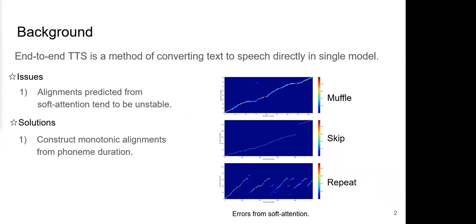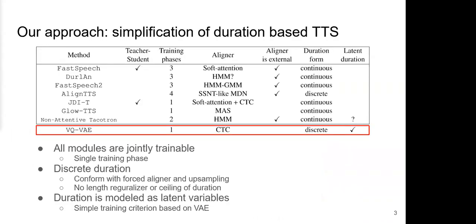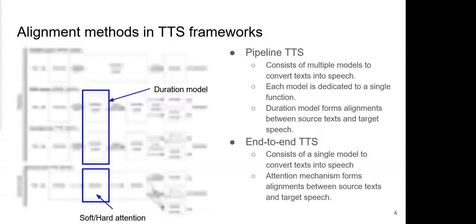Recent methods construct alignments based on phoneme duration by incorporating a duration model. We take a simplified approach to incorporate a duration model to N2 and TTS. In our method, all modules are jointly trainable, so only a single training phase is required. We represent duration in discrete form, so it conforms with force aligner and upsampling. Therefore, neither a length regularizer nor setting of duration is required. Our method handles duration as a latent variable, so a model can be optimized with a single training criterion based on VAE.